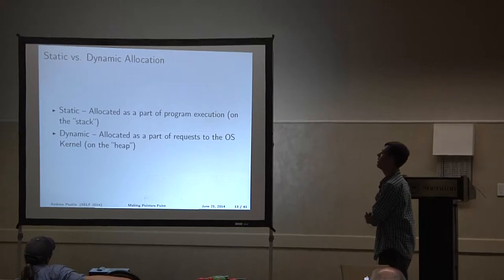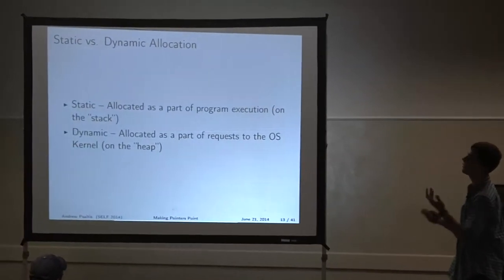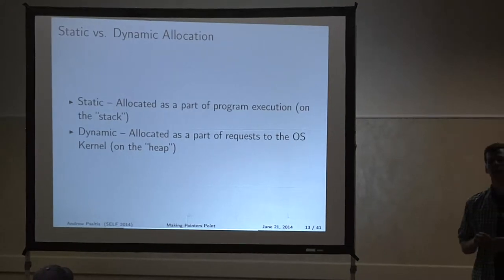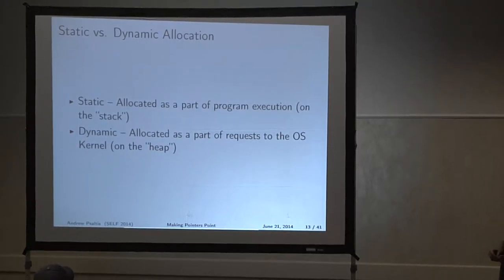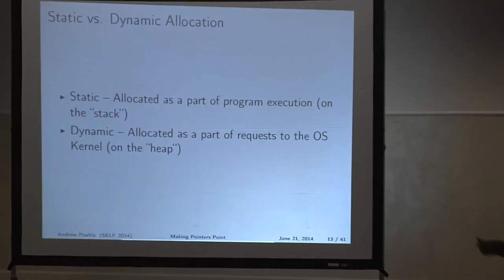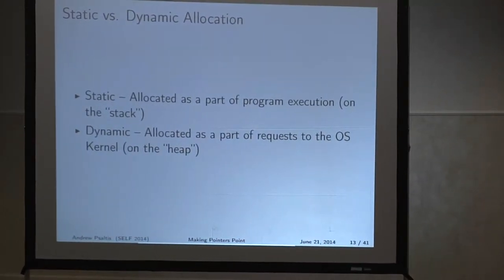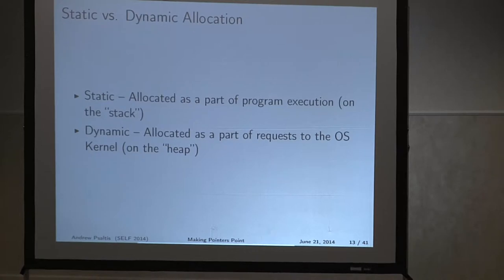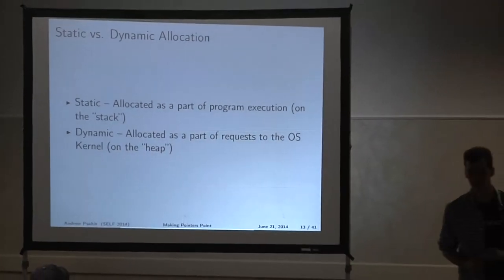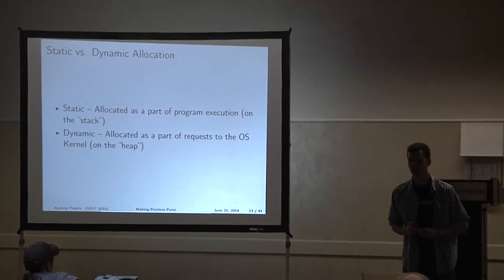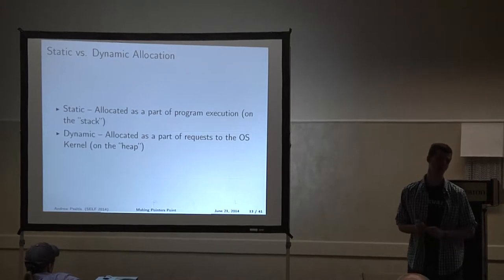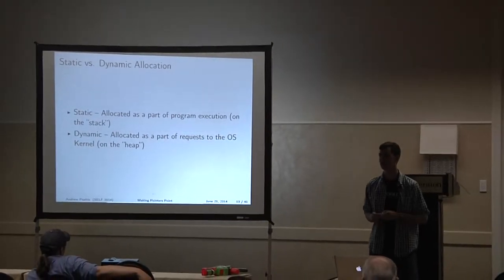Typically you allocate memory in applications in two ways. Statically, which is done as a part of program execution — if you say int x equals 42, that value 42 would be put on the stack above the current function call. It's called the stack because the data structure really kind of resembles a stack. And also dynamic allocation — in this case, it is allocated as a part of a request to the operating system. These are done usually using system calls. This goes on to the heap. The heap is not necessarily contiguous.